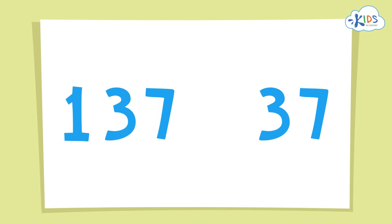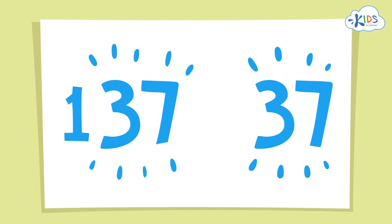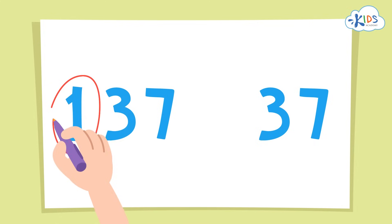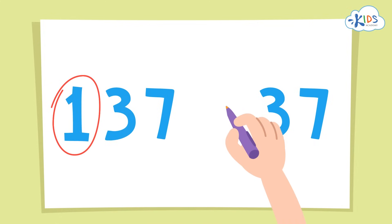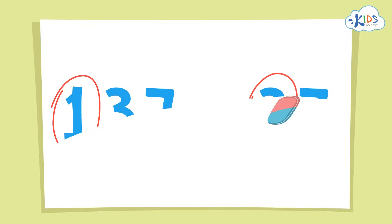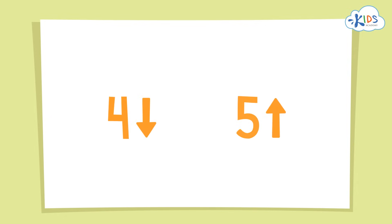Even though both of these numbers have 37 in them, you'll see that we're going to round them differently because we are rounding 137 to the nearest hundred and 37 to the nearest ten. The same rule still applies for rounding to the hundreds place as it does for rounding to the tens. Five is the key number — if it's five or higher, you round up, but if it's four or lower, you round down.